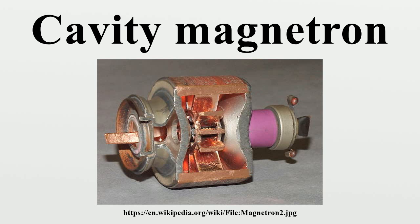In microwave-excited lighting systems such as a sulfur lamp, a magnetron provides the microwave field that is passed through a waveguide to the lighting cavity containing the light-emitting substance. These lamps are much more complex than other methods of lighting, and not commonly used though efficient.